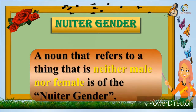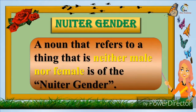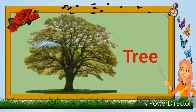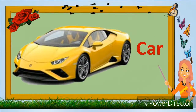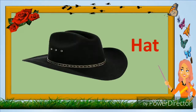A noun that refers to a thing that is neither male nor female is of the neuter gender. For example: tree, car, hat.